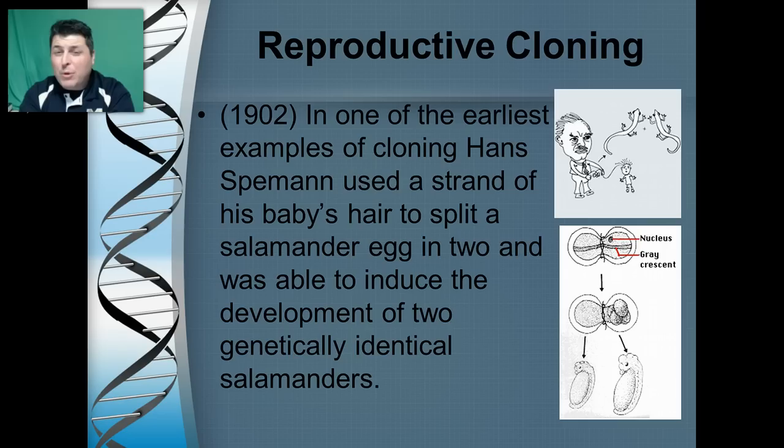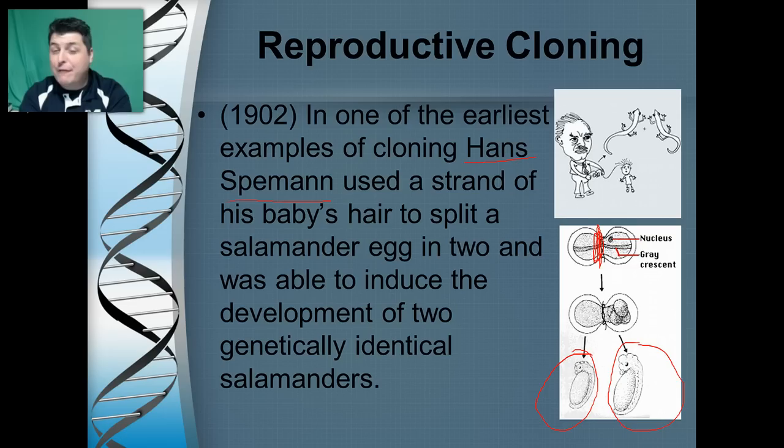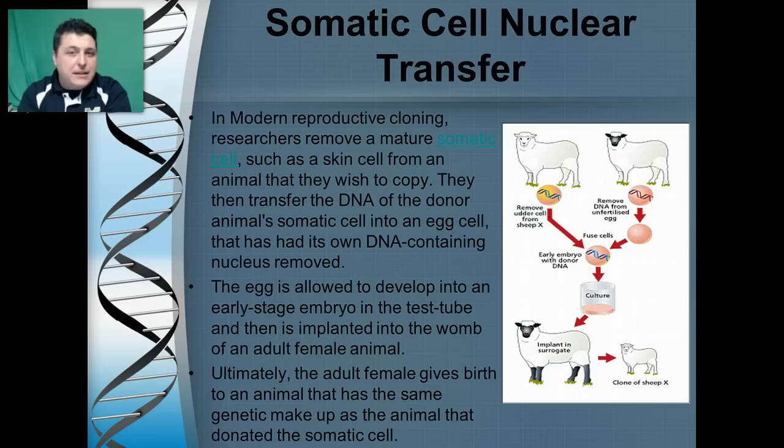One of the earliest examples of cloning occurred in 1902 when Hans Spemann took a strand of his baby's hair to split a salamander egg in two. As a result, he was able to induce the development of two genetically identical salamanders — a kind of forced twinning. This was an early example of cloning.